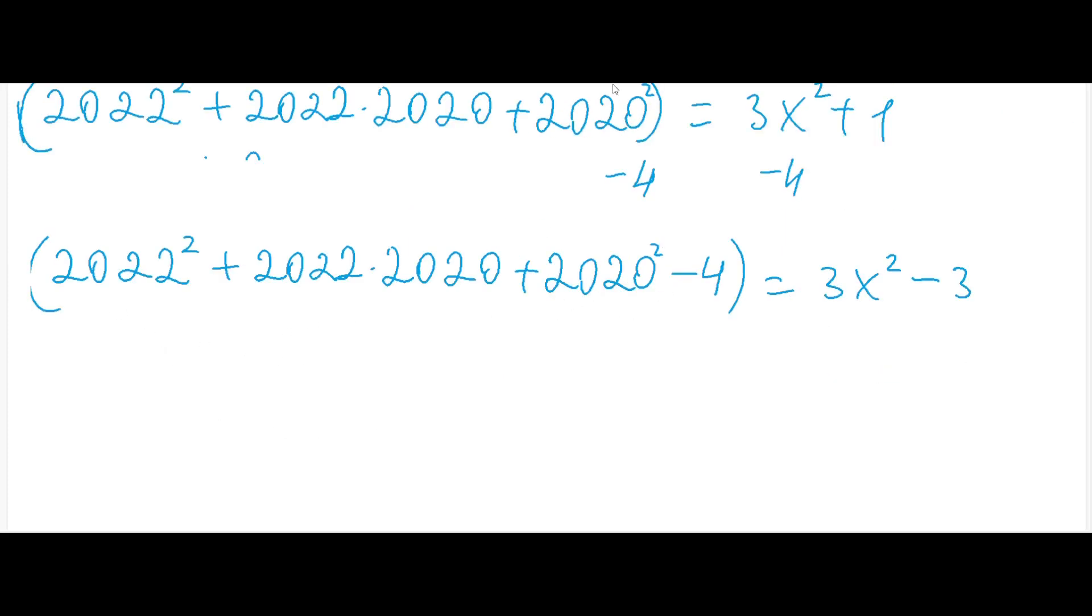And here we can factorize this one as the squares. 4, we can write down as 2 squared. And if we will subtract here and here, we will get the expression. 2022 squared plus 2022 times 2020 plus here we will get 2020 minus 2 will give us 2018 times 2020 plus 2. We will get 2022 will equal to 3 times x squared minus 1.